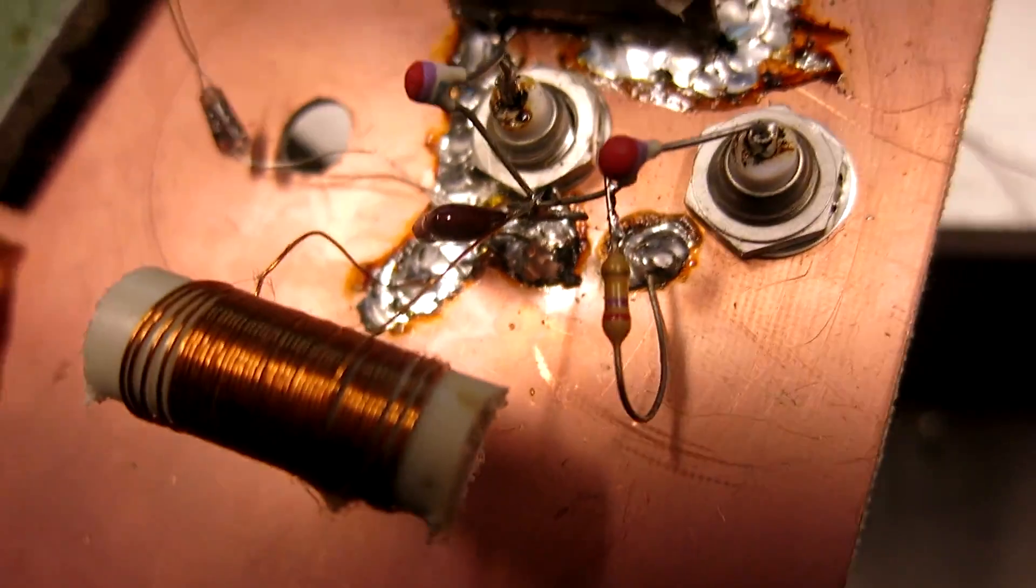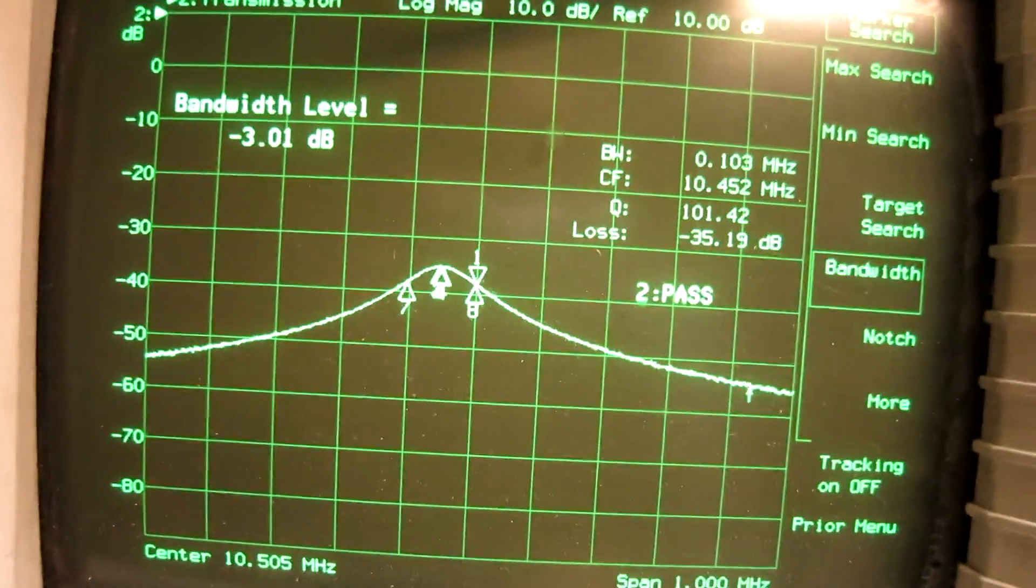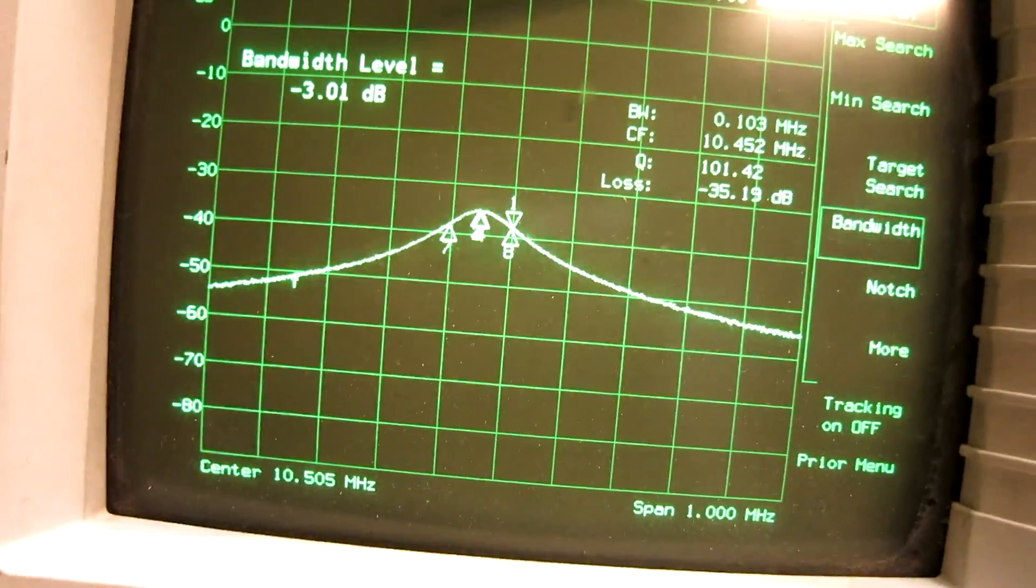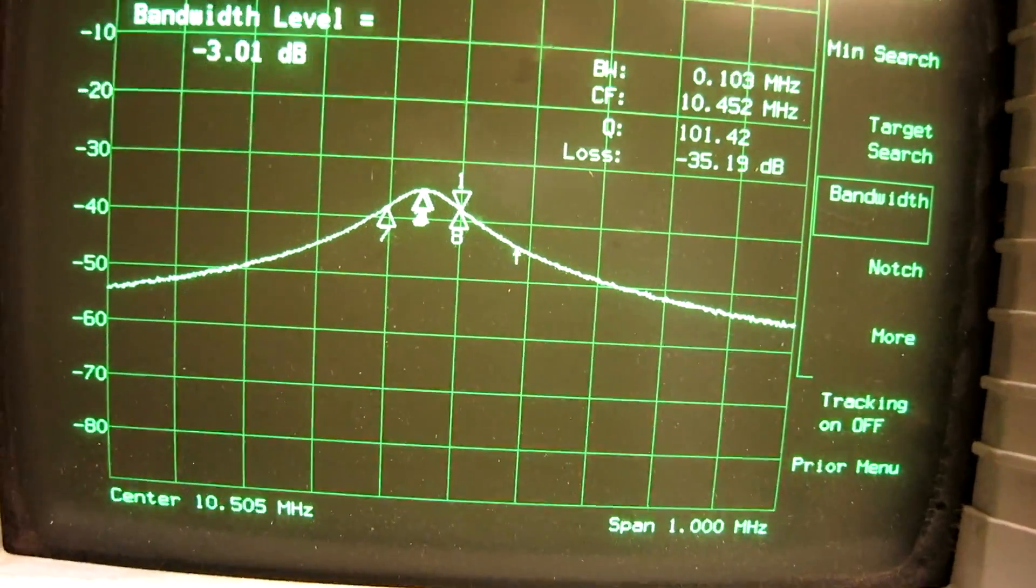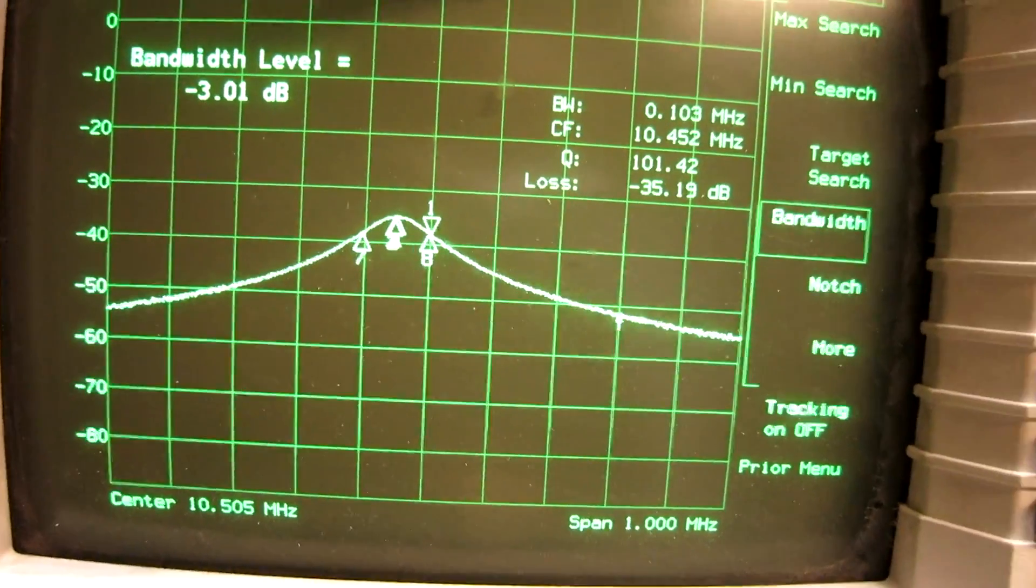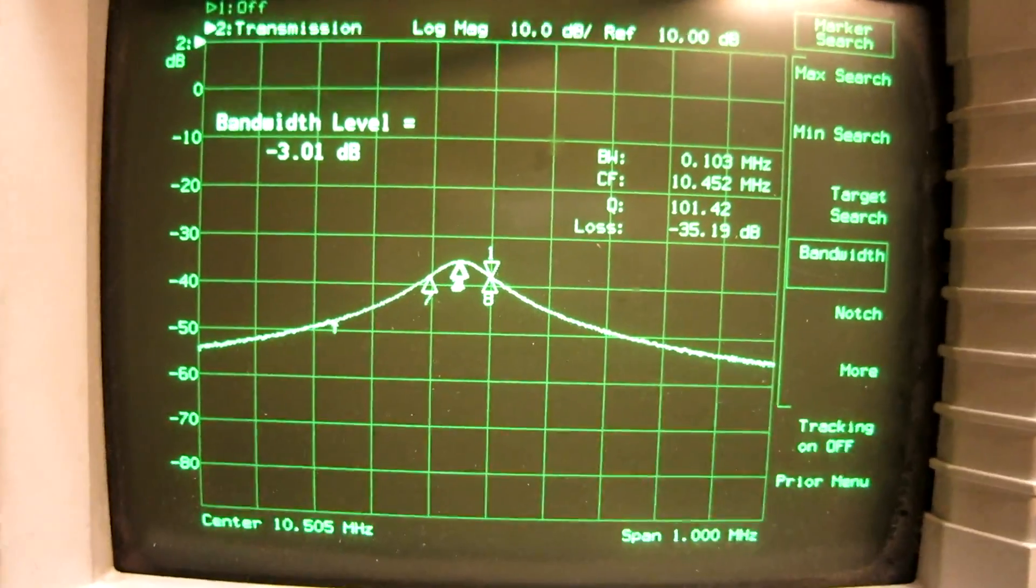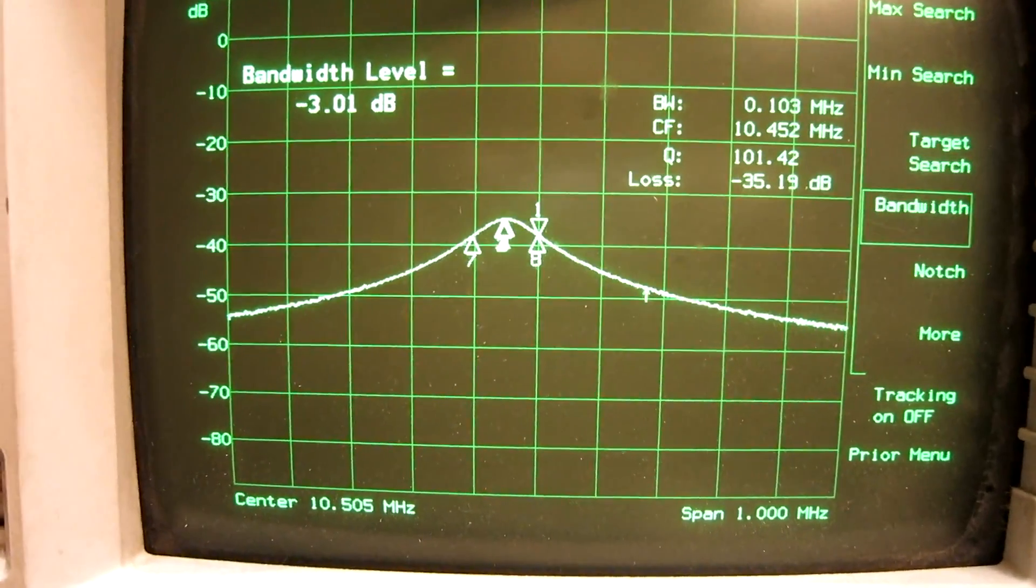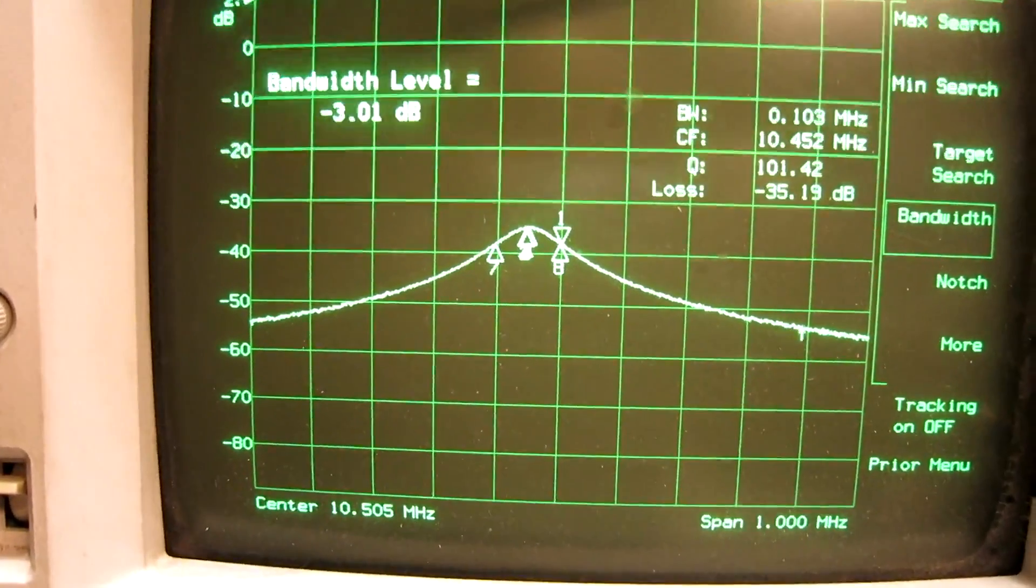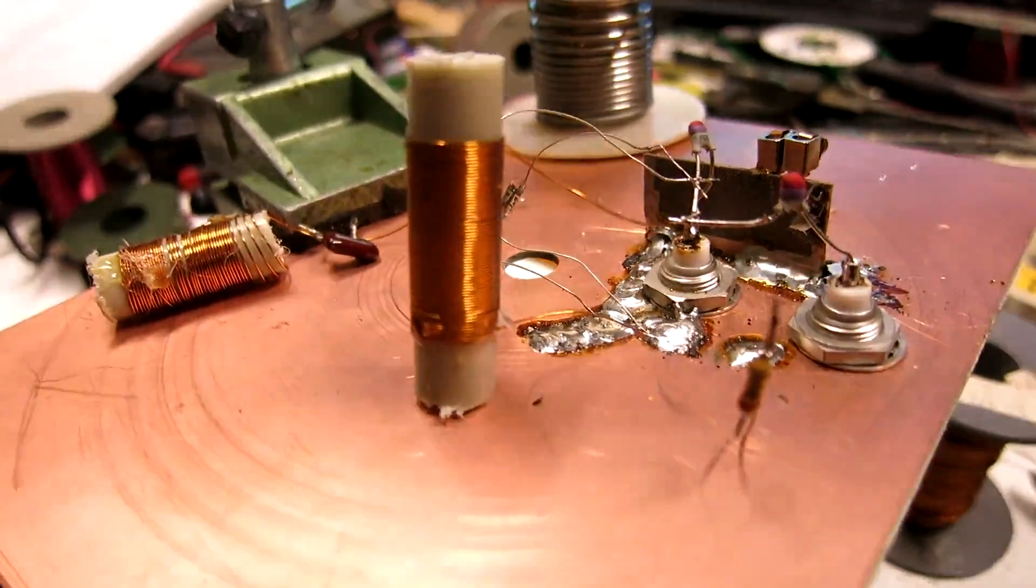I have added 330 kilo ohms in parallel, and then I look at what is now bandwidth and Q. The loss has increased from 31.7 to 35. That is not as much as 6 decibels. So this coil has an impedance that is smaller than 330 kilo ohms when it runs with this 22 pf as a resonator. So this is a little bit too lossy to be added into my filter.